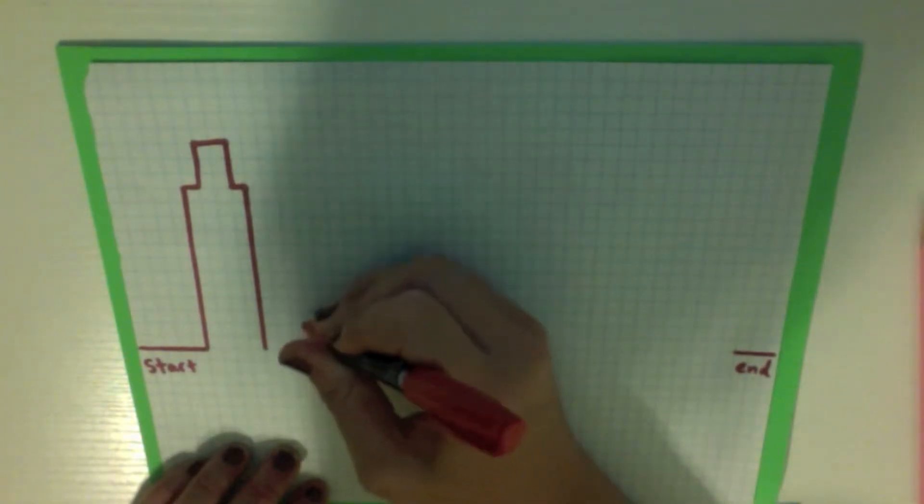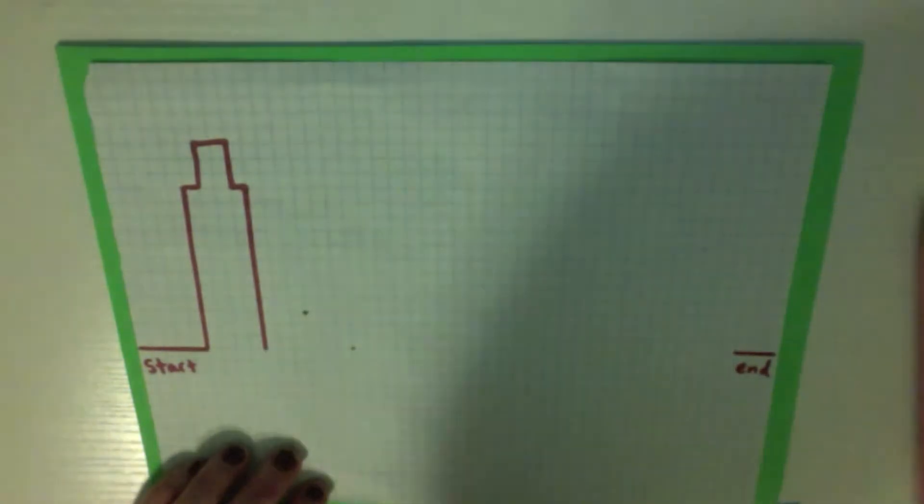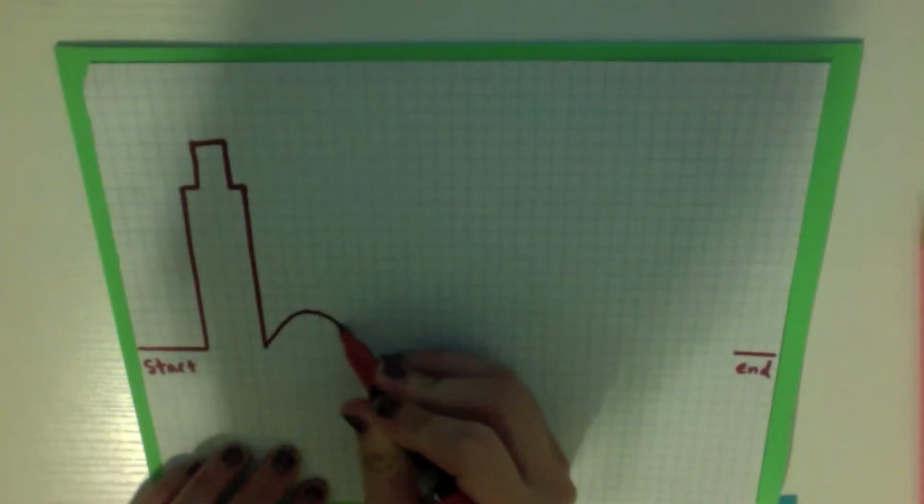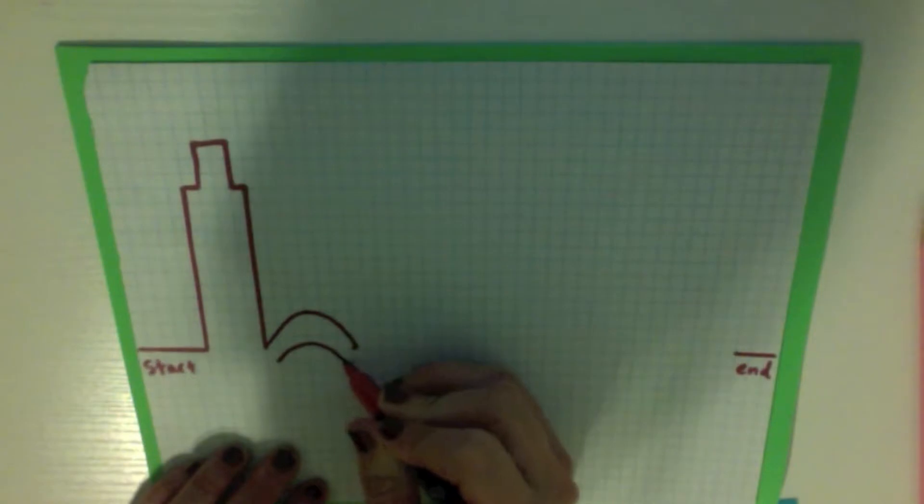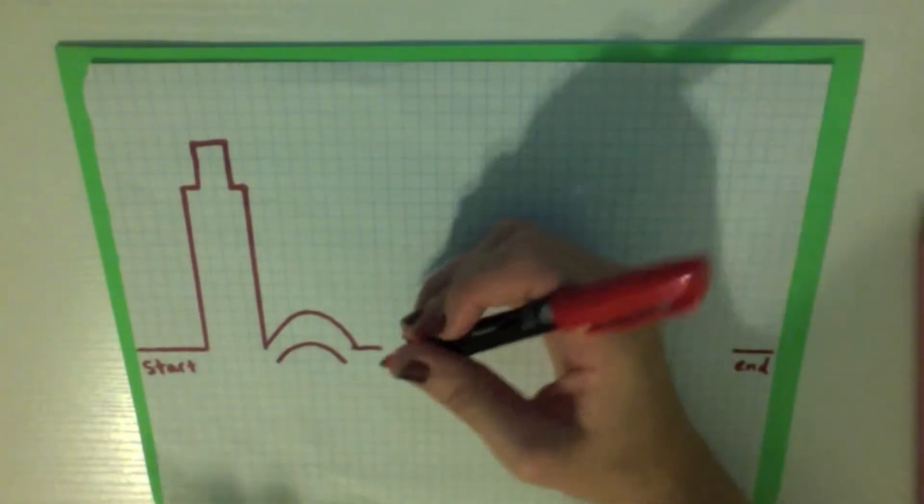So I went 3 spaces over, 3 spaces up. And now I can draw a curve line for my bridge. Curve line down here. Then I can continue building onto my city.